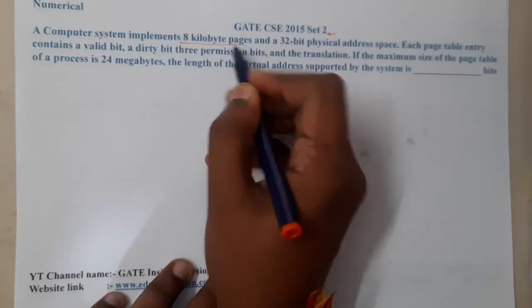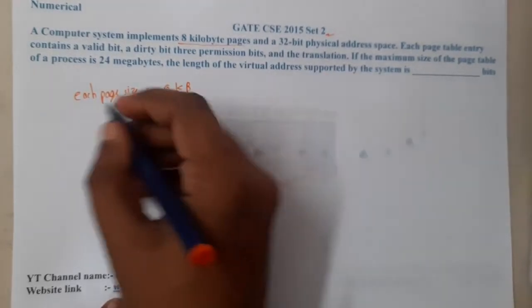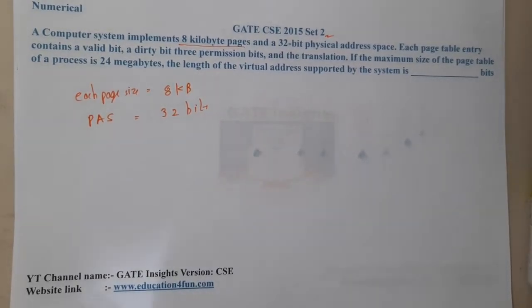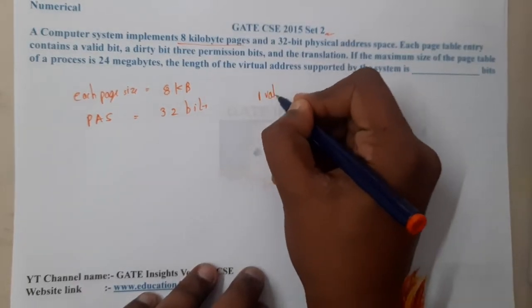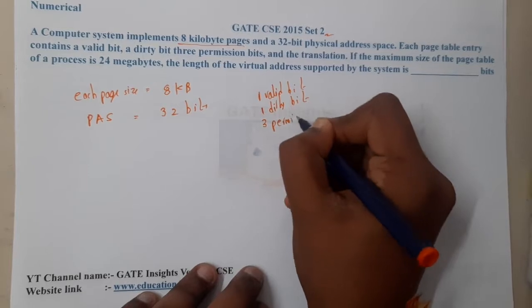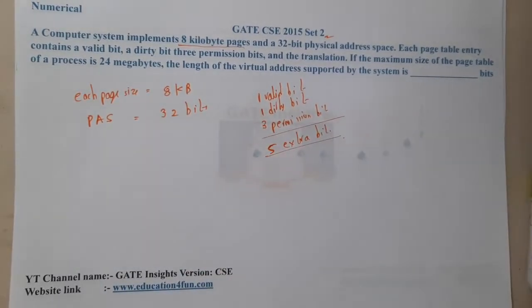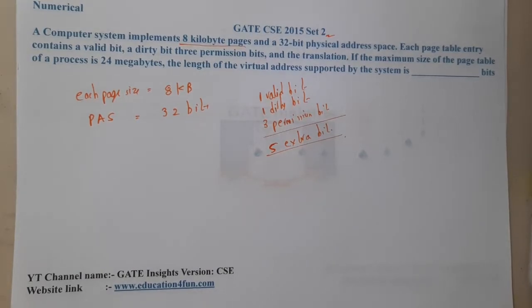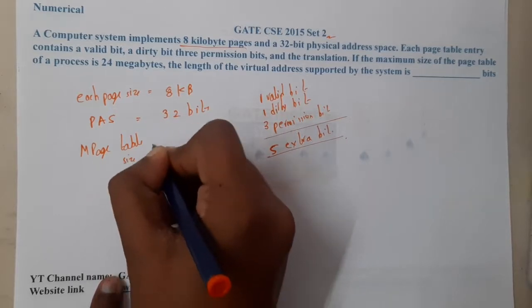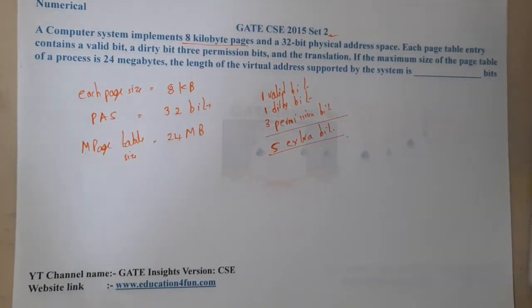The given question is: a computer system implements 8 kilobyte pages, so each page size is 8 KB. The physical address space is 32 bits. Each page table entry contains a valid bit, one dirty bit, and three permission bits — a total of five extra bits. The maximum size of the page table of a process is 24 MB. The question asks for the length of the virtual address supported by the system.